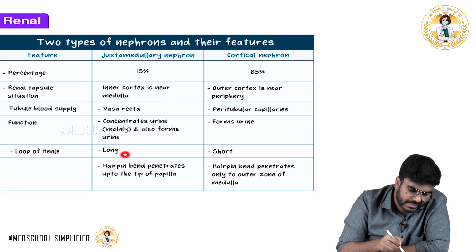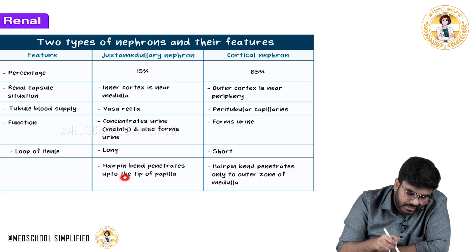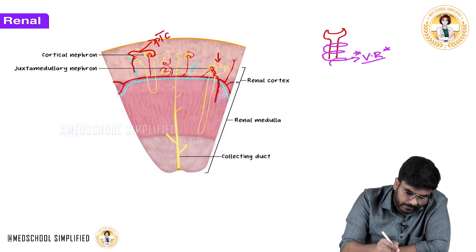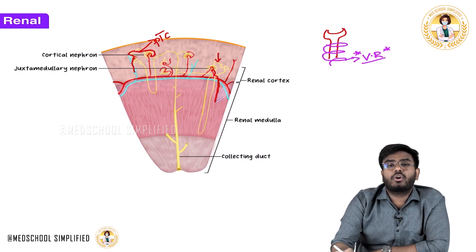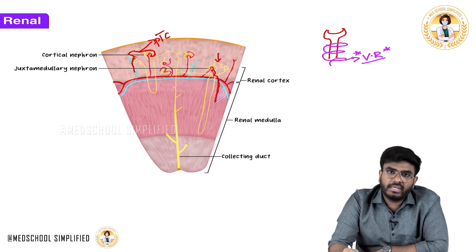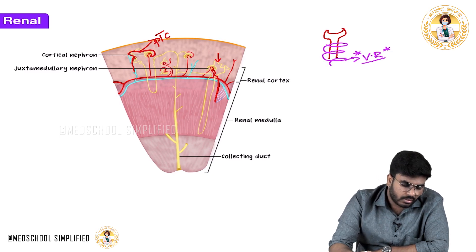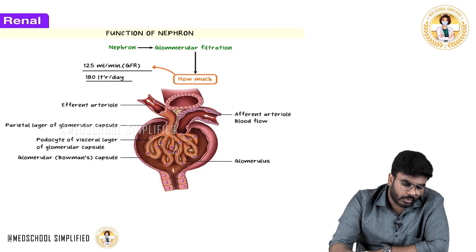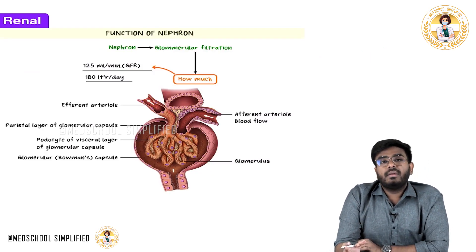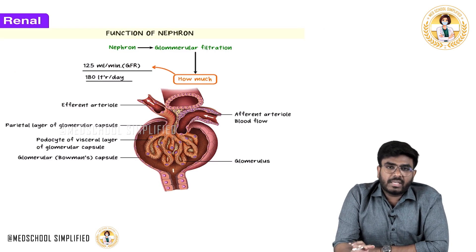The loop of Henle in juxtamedullary nephrons is long, and the hairpin bend penetrates all the way to the tip of the papilla, going deep inside the medulla. This long loop of Henle helps to concentrate the urine.